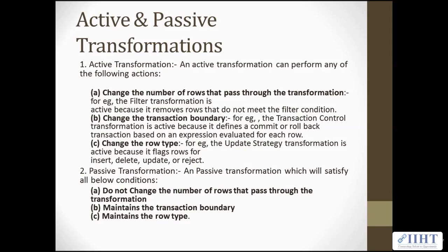For example, the Transaction Control transformation is active because it defines a commit or rollback transaction. And then change the row type. For example, the Update Strategy transformation is active because it flags rows for insert, update, delete, or reject.